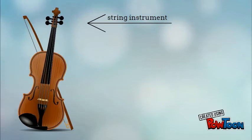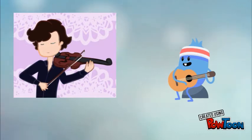As you all know, the violin is a string instrument, and unlike its fellow string instrument, the guitar, you use a bow to produce sound instead of plucking or strumming it.